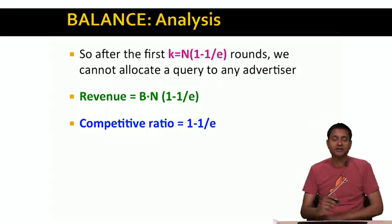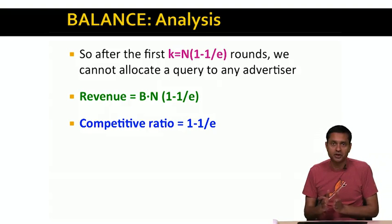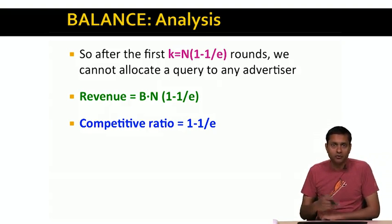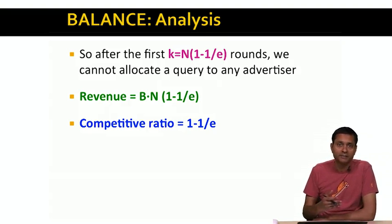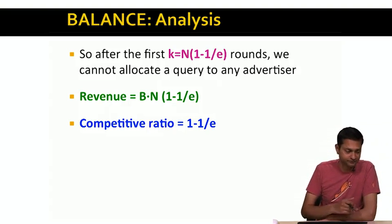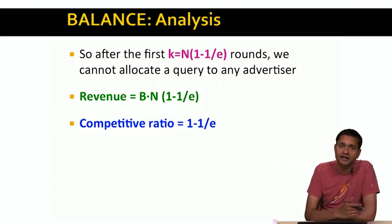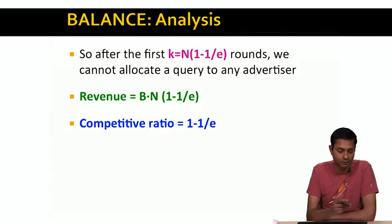What we've shown is an example of a scenario where the balance algorithm has a competitive ratio of 1 minus 1/e. The actual proof that the balance algorithm achieves this competitive ratio and can do no worse than 1 minus 1/e is outside the scope of this lecture; I encourage you to read the actual paper for that proof.